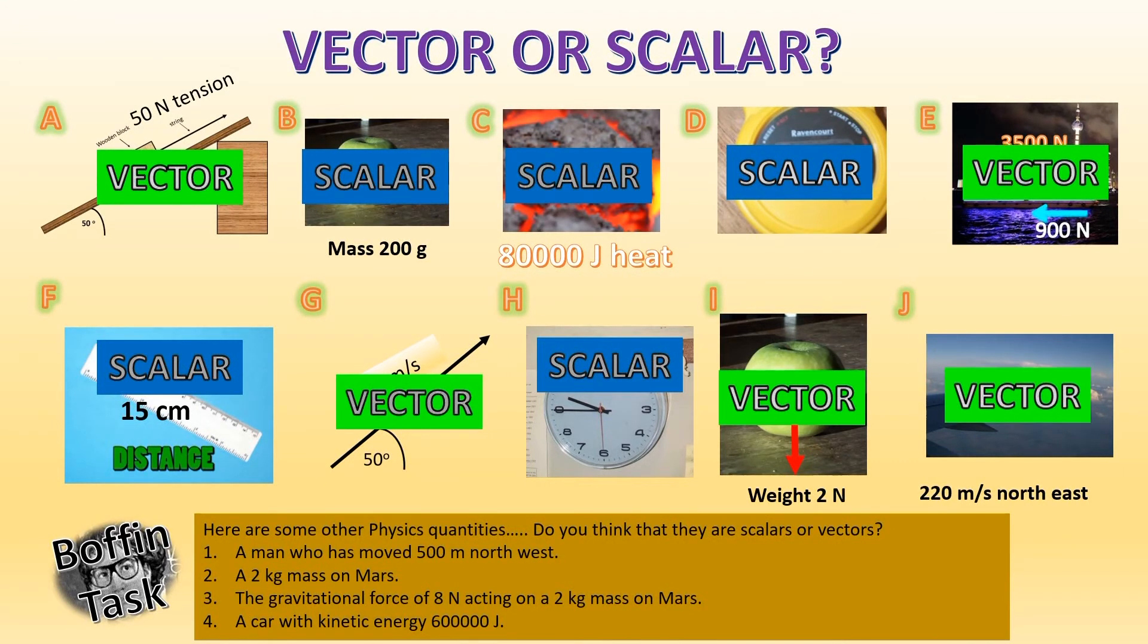Okay, here's some little boffin tests. Just have a look at these quickly. Do you think the following are scalar or vector quantities? So, a man who has moved a distance of 500 meters northwest. Any ideas? Sorry Marlon, she's ready. I need to hurry up. So I'm going to tell you: it's a vector. Oh, mass. Kilograms. Mass. Remember, get down your brain: mass is a... scalar. Click again. Scalar. There we go.